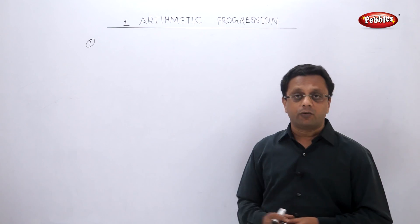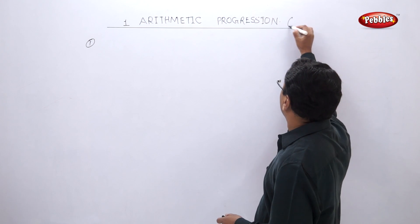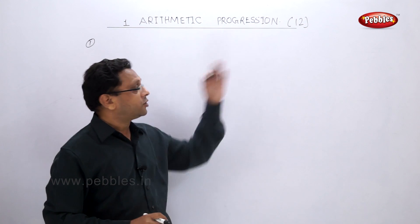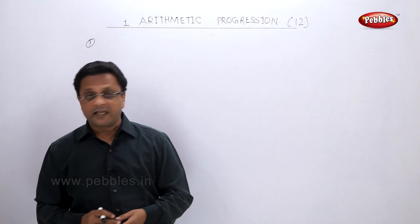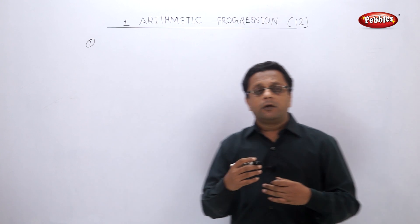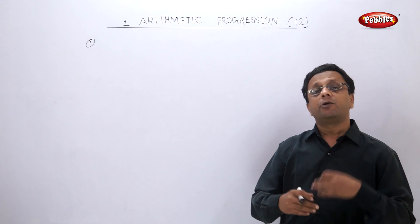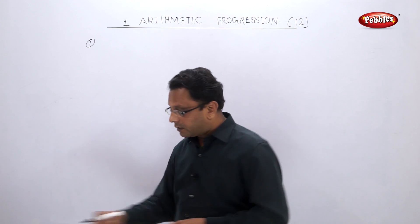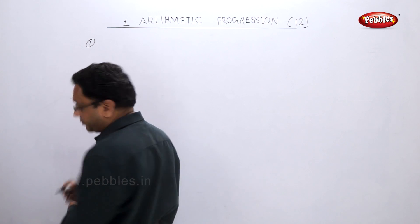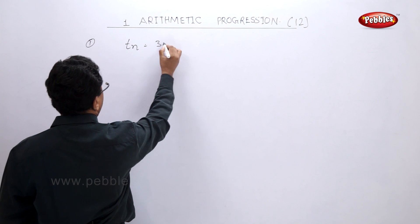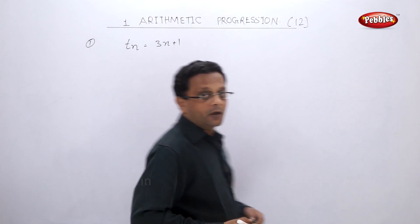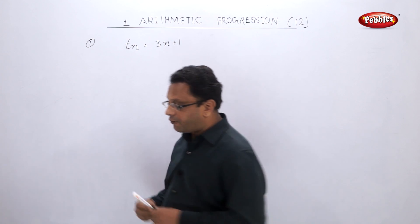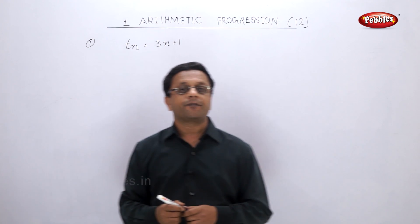Before we move to solved examples, note that for this chapter there are 12 marks in your paper. Now, let us see one example. For a particular sequence, the nth term is denoted by a formula. Here, they say that Tn is given by 3n + 1. We have to find out the first 4 terms of this sequence.